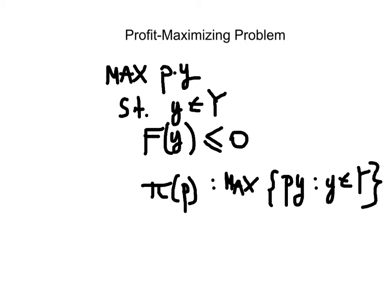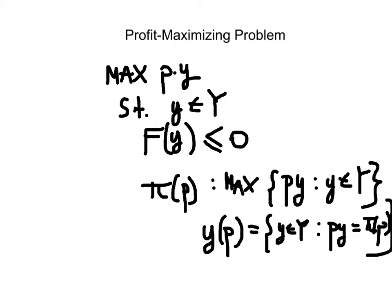And the supply correspondence, which is really the solution bundle to this problem, maximizes PY. Supply correspondence is defined as technologically feasible production plans such that PY is equal to the maximum value that it can take, which is the profit function.